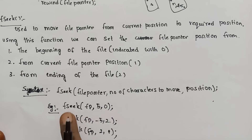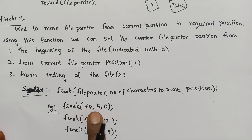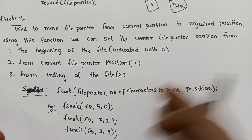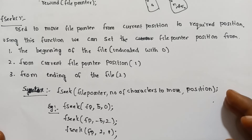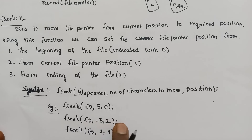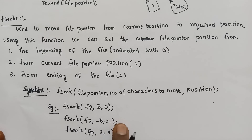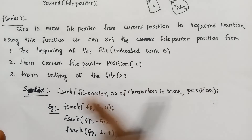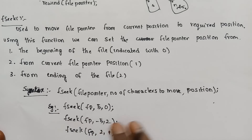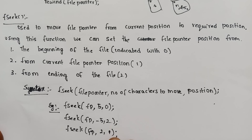For example: fseek(fp, 5, 0) — from the beginning of the file, move the cursor 5 characters in the forward direction. Next, fseek(fp, -5, 2) — from the ending of the file, move the file pointer 5 positions in the backward direction. A negative value indicates backward direction.